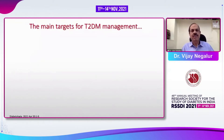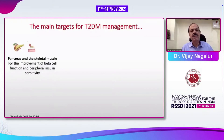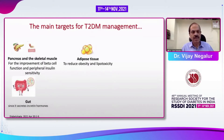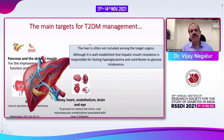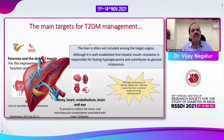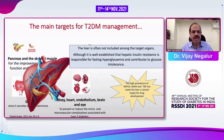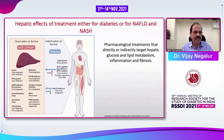The main targets for type 2 diabetes management are usually the pancreas and skeletal muscle for improving beta cell function. We attack adipose tissue to reduce obesity and lipotoxicity. The gut is important for its hormones, and the kidney, heart, endothelium, brain, and eye are protected by adequate diabetes control. However, the liver is often not included among target organs, even though hepatic insulin resistance is responsible for fasting hyperglycemia and contributes to glucose intolerance — making the liver a central target for drug development.